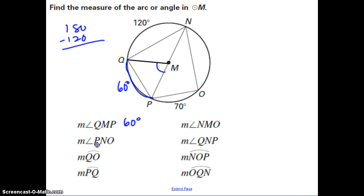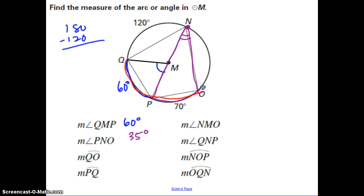Next, find the measure of angle PNO. This angle has its vertex on the circle, so its measure is half of the intercepted arc. The intercepted arc is 70 degrees, so half of 70 gives us 35 degrees for angle PNO. Then, find the measure of arc QO — the minor arc from Q to O. Using the arc addition postulate, we add the 60-degree arc and the 70-degree arc to get arc QO equal to 130 degrees.